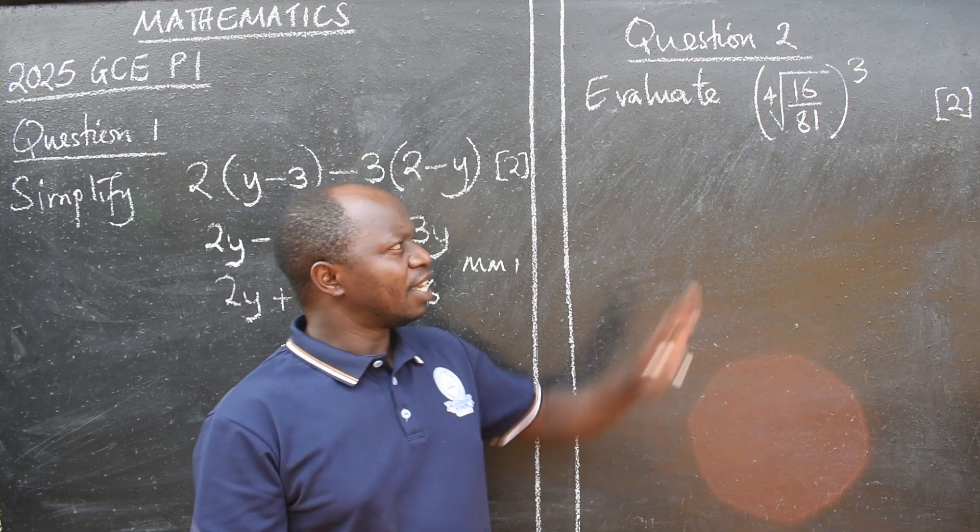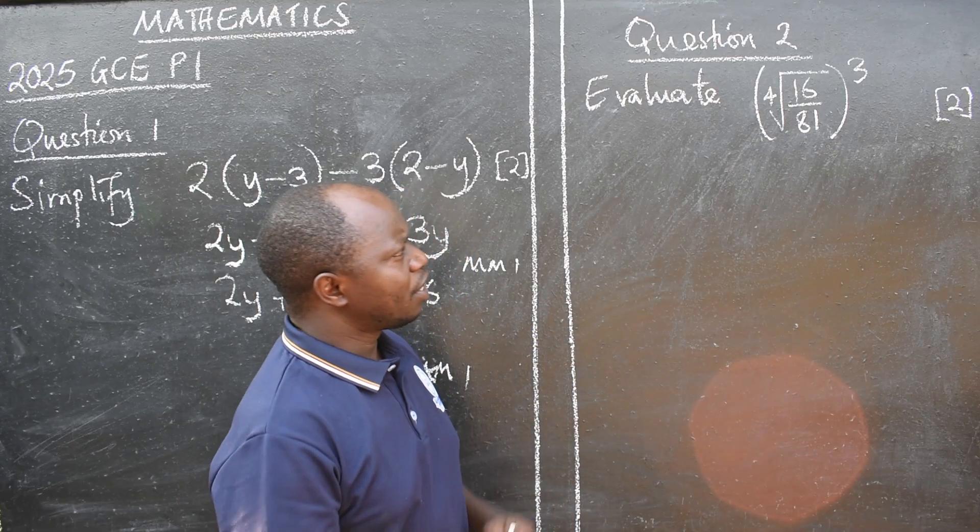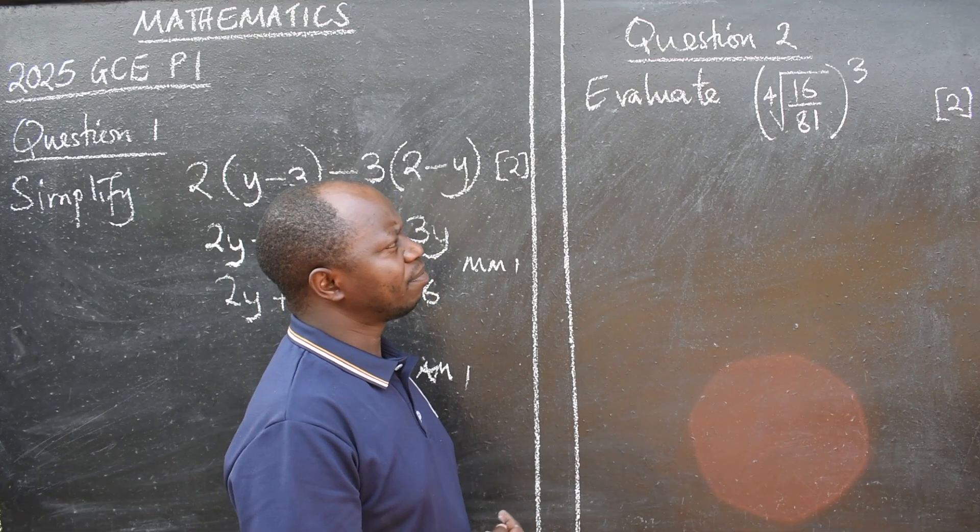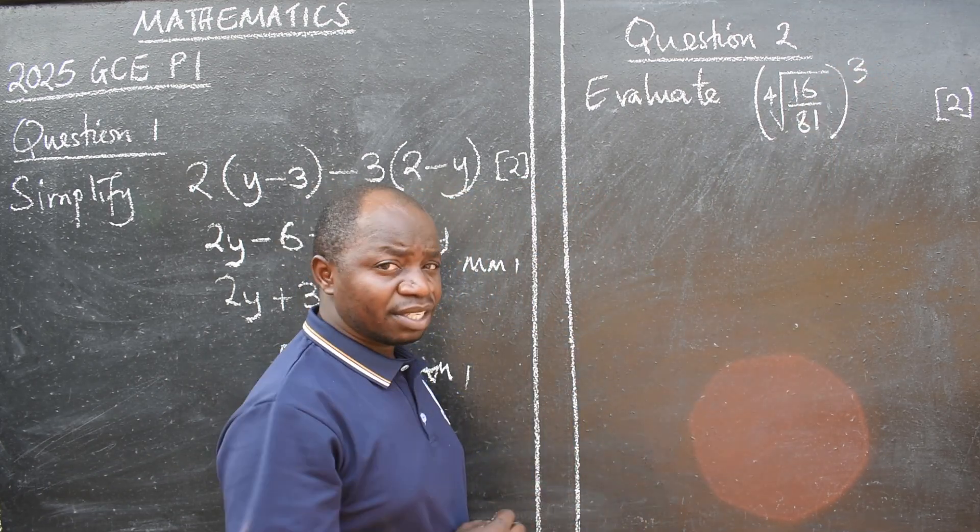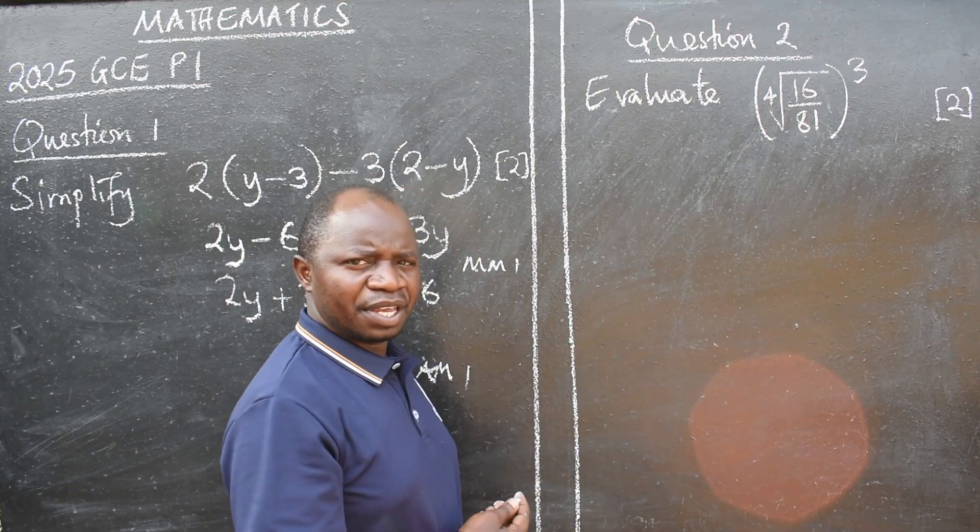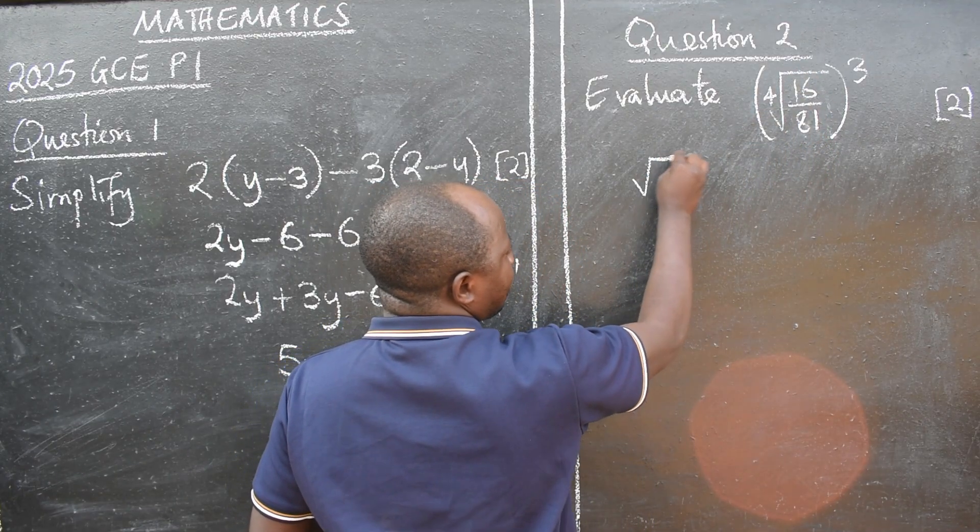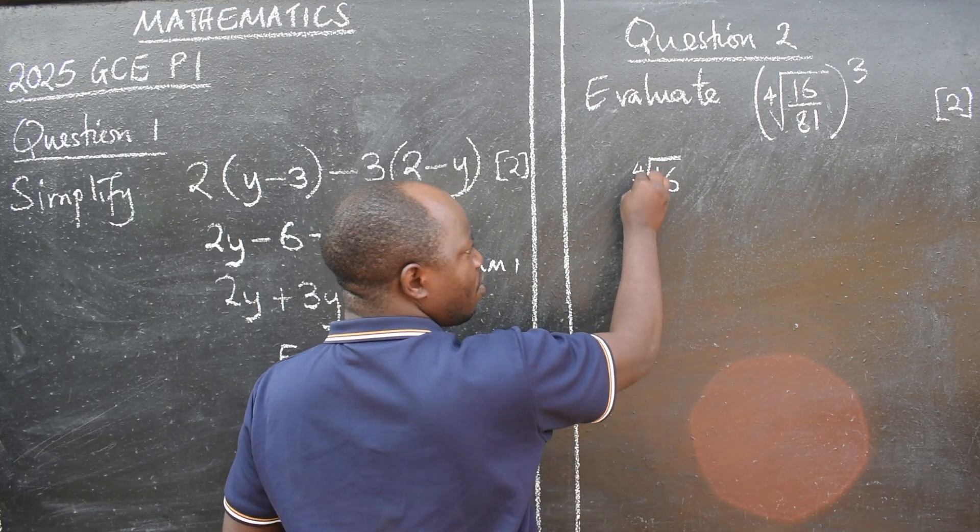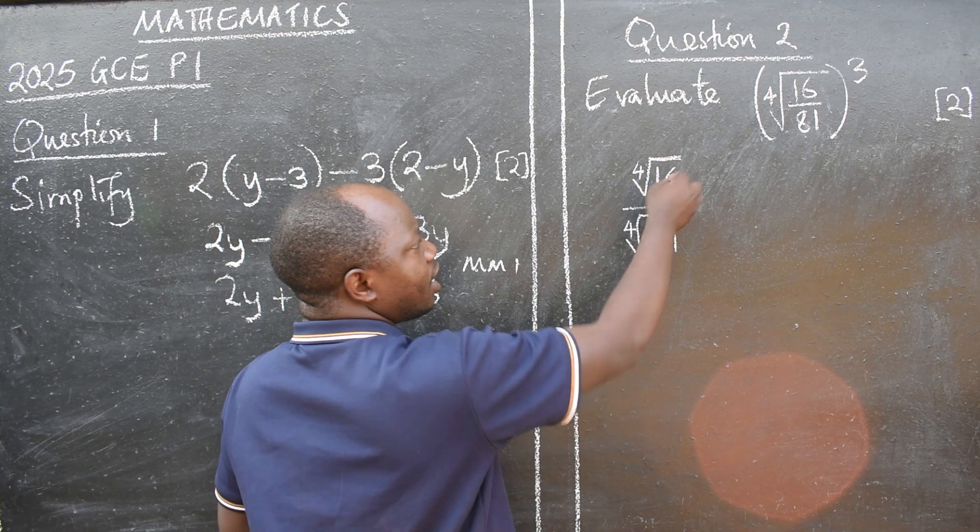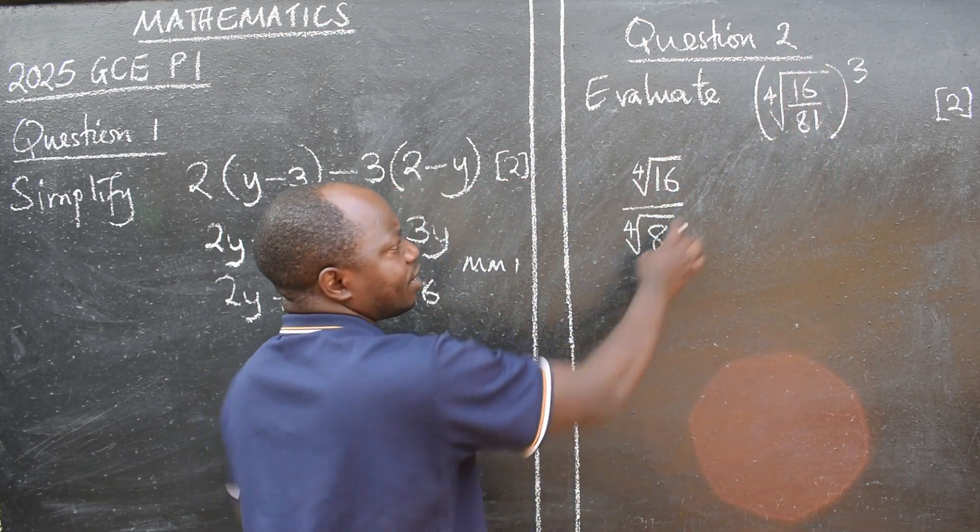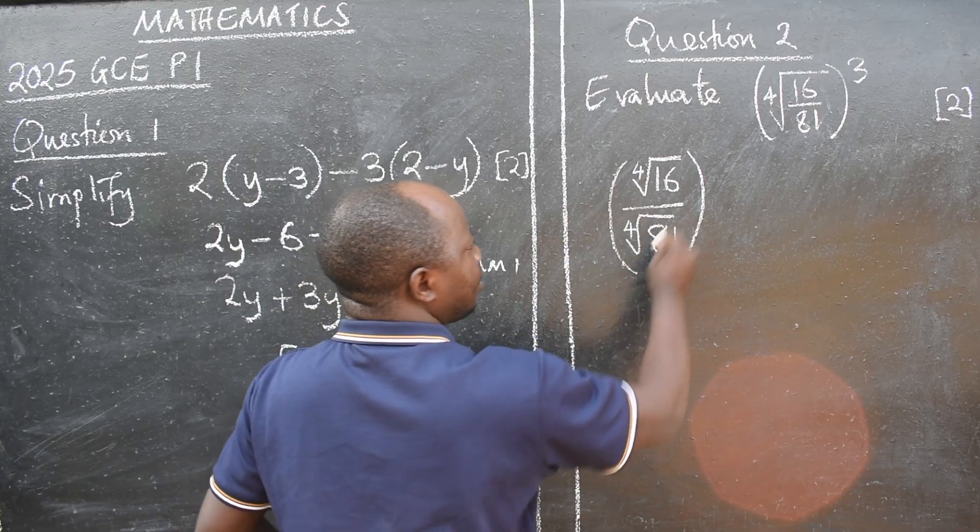So we have fourth root of 16 over 81 to the power 3. Again, this is simple. Let's identify the topic. Is this algebra? No. This is index notation or indices. We have to remember some concepts here. We are saying we have to find the fourth root of this fraction here. Then to the power 3. We are going to apply some concepts here. When you have a fraction inside, it means you can separate by doing it like this. We have 16. We have a 4. Over. We have 81. And a 4. So what we have inside here can be written like this. When you have a fraction, you can separate them like this. But remember, there is power 3 outside. After this, power 3.